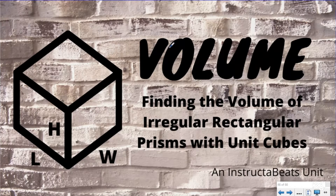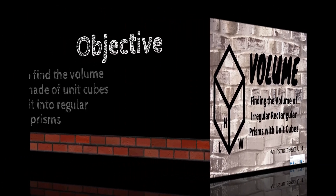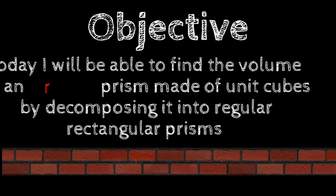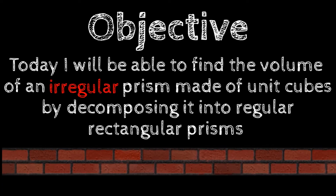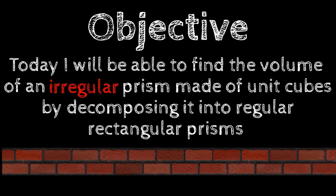What up everybody, back again with our volume unit. Today we are going to be finding the volume of irregular rectangular prisms made of unit cubes. Our objective today: I will be able to find the volume of an irregular prism made of unit cubes by decomposing it into regular rectangular prisms.